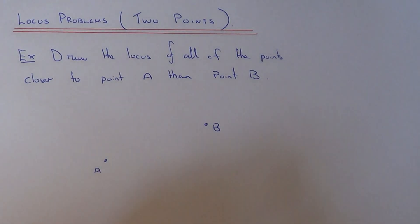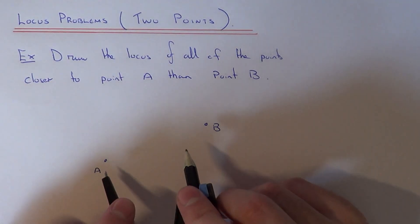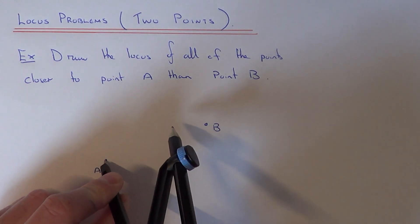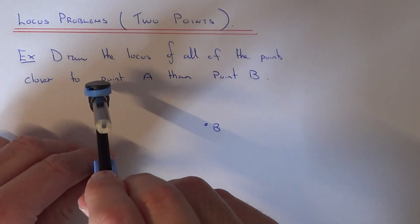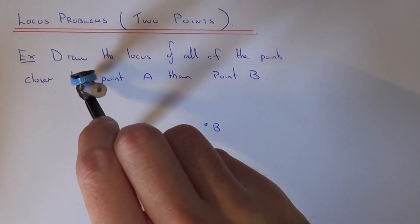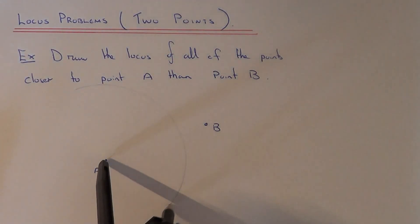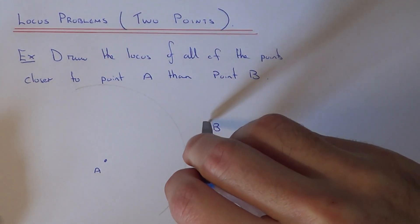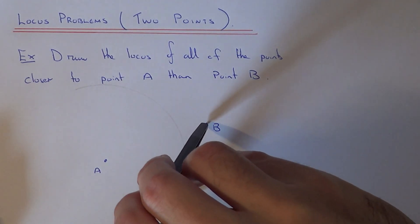So if you get your compass, we need to open our compass about three quarters the length between A and B, and we just need to do an arc from A, and we need to do an arc from B, so keep the compass the same length.